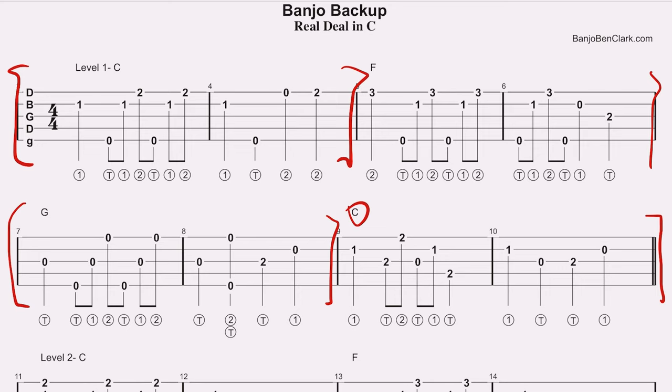Whenever we start on a C measure, we're going to play a C note. When we change to an F chord, we're going to go up to this F note. Later on we'll go down to the other F within reach. When we go to the G chord, we're going to hit a G note to start with, and then back to a C note.